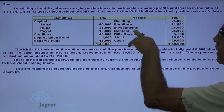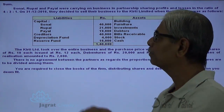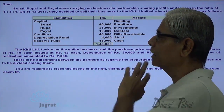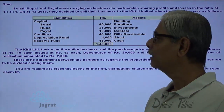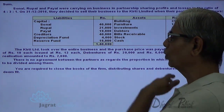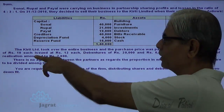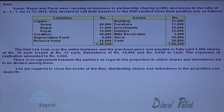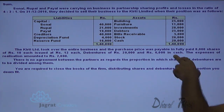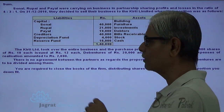Their balance sheet position included building, furniture, investment, debtors, bills receivable, reserve, stock, cash, capital, creditors, depreciation fund (presumed against building), and reserve fund. Kirti Limited took over the entire business. The purchase price was payable as 8,000 shares of Rs. 10 each issued at Rs. 12 each, debentures of Rs. 20,000, and Rs. 6,000 cash payment. The expenses of realization amounted to Rs. 2,000.